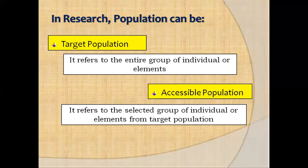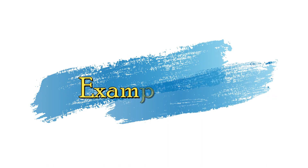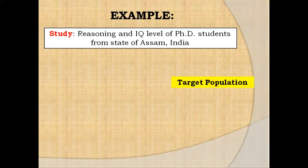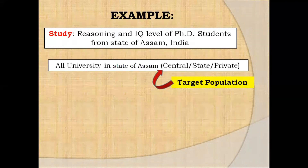Accessible population is referred to as the selected group of individuals or elements from the target population. To simplify this with a hypothetical example: let's say the researcher is interested in conducting a study on the reasoning and IQ level of PhD students from the state of Assam. In this study, the target population will not be schools or colleges, but all the universities present in the state of Assam — whether central, state, or private universities.